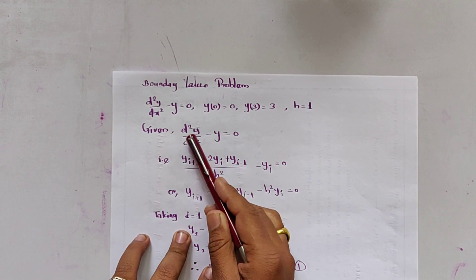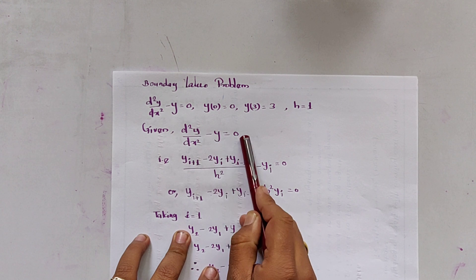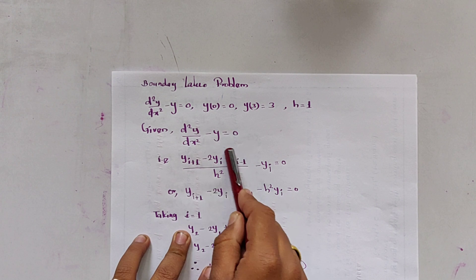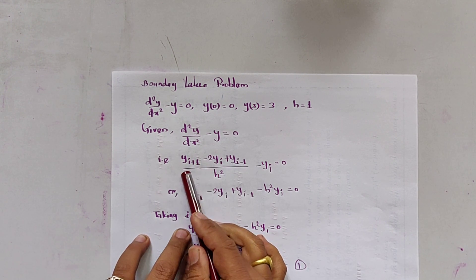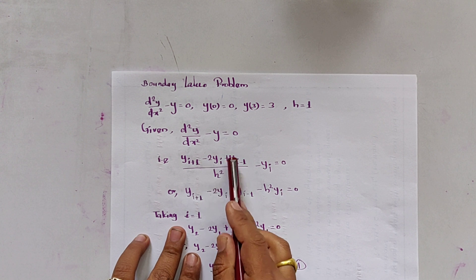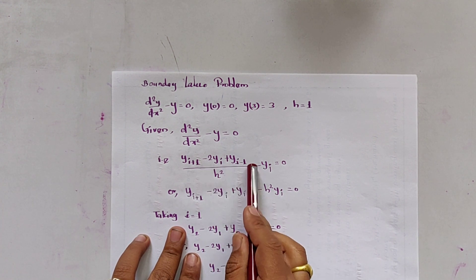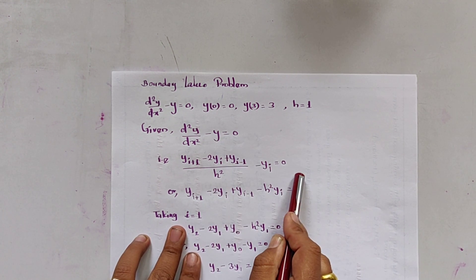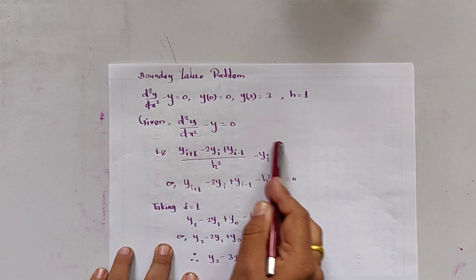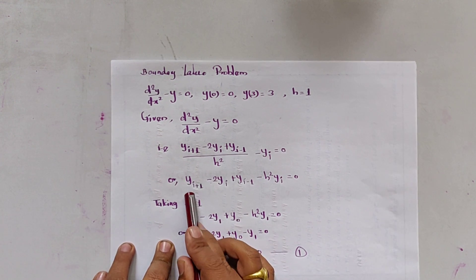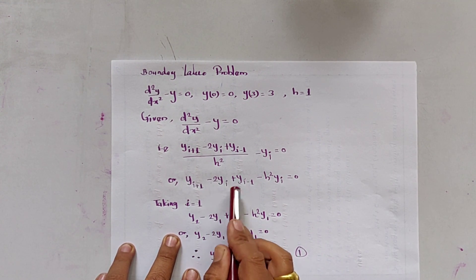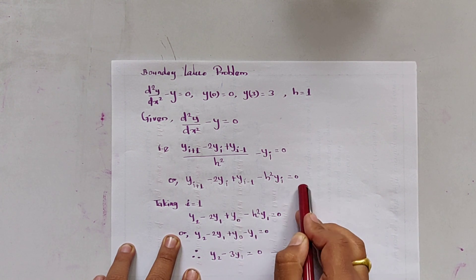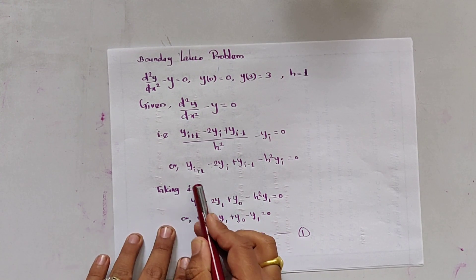Given d²y/dx² - y = 0, using the central difference formula, d²y/dx² is approximated as (y_i+1 - 2y_i + y_i-1) / h². Substituting and simplifying, we get: y_i+1 - 2y_i + y_i-1 - h² y_i = 0.